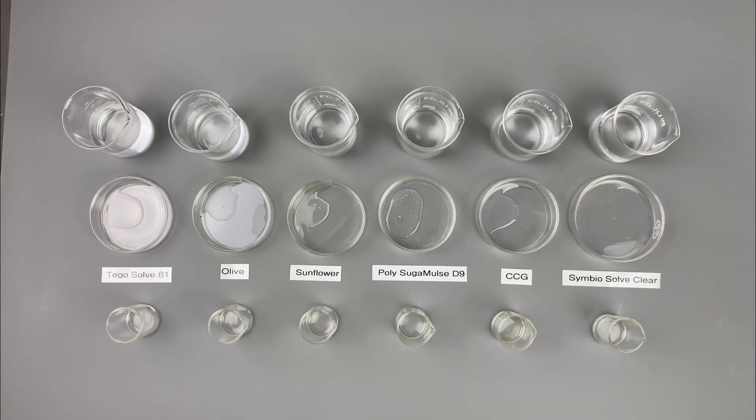Look at the HLB number on the solubilizer and that can help some, but generally most natural solubilizers, they'll say to use about 10 parts to one part oil for a plant oil, or for essential oil or fragrance, about five parts to one part. And then you build it from there.